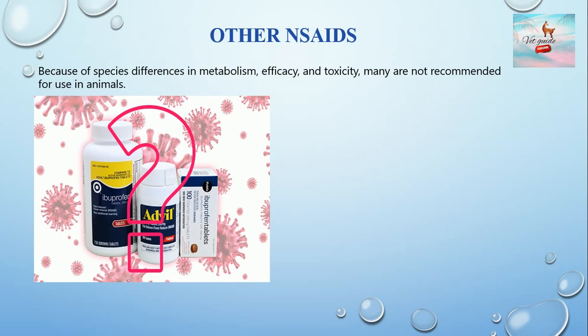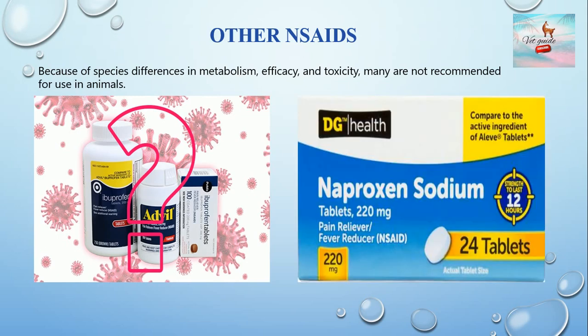Naproxen has been used in horses at a dosage of 5–10 mg/kg once or twice daily. The elimination half-life is 5 hours in horses. In dogs, the elimination half-life of naproxen is 35–75 hours, presumably because of extensive enterohepatic recirculation. Due to this prolonged half-life, dogs are extremely sensitive to naproxen's adverse effects.